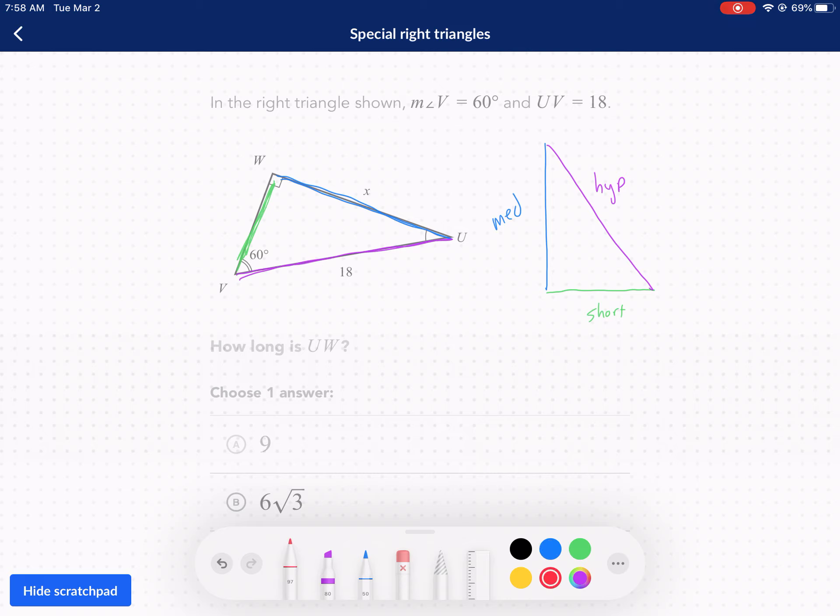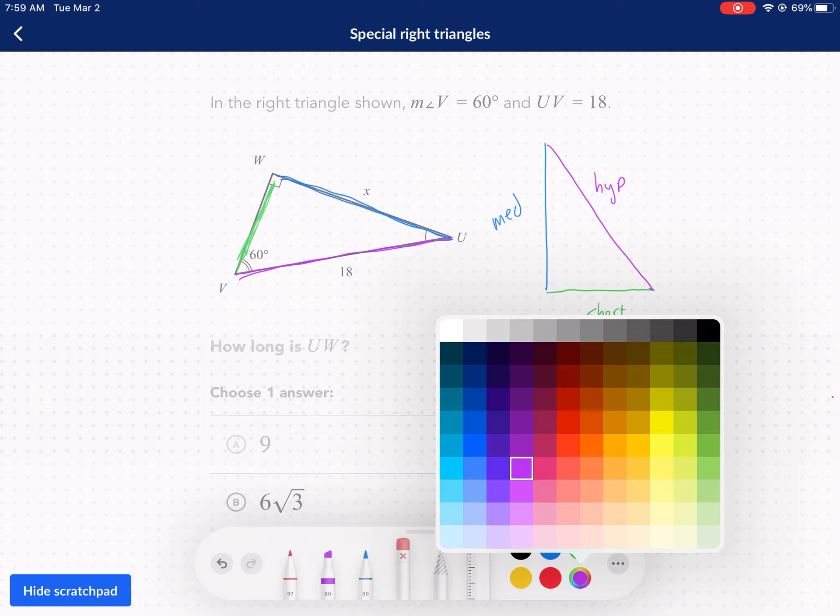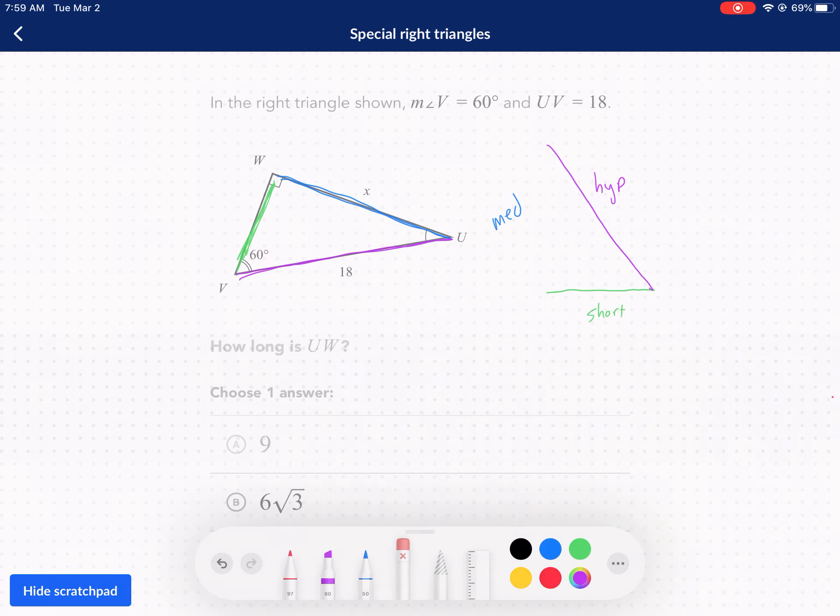Now, a couple things. One, this is a 90-degree angle. It's always opposite the hypotenuse. The hypotenuse does not touch the 90-degree angle. I should make that purple, shouldn't I? Yeah, make that purple. Okay, so this is our 90-degree angle. There we go, 90-degree angle. Now, our medium side opposite that is a 60-degree angle.